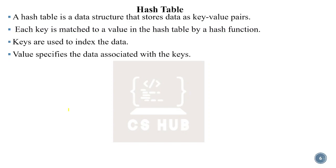A hash table is a data structure that stores data as key-value pairs. Data is stored and retrieved using the hash function. Each key is matched to a value in the hash table by the hash function. Keys are used to index the data, and the value specifies the data associated with the key.